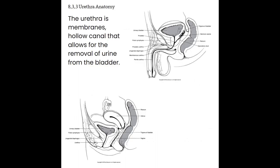The urethra is a membranous hollow canal allowing removal of urine from the bladder. In males it is about 20 centimeters long, with three separate parts: the prostatic urethra, the membranous urethra, and the penile urethra. The urethra in males also acts as part of the ejaculatory pathway, connecting with ducts from the testicles — serving dual purpose for the urogenital tract systems. In females, the urethra is very short — just about a 3.5 centimeter tube connecting the bladder to the outside.